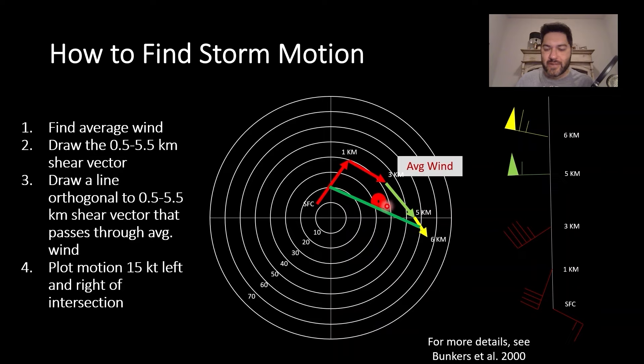Then you want to draw a line that's orthogonal to this green line that does pass through that average wind. Where you see that intersection, you plot 15 knots left and right of that. This will be the direction and speed of your left mover, and this will be the direction and speed of your right mover. For the right mover, it looks like it's moving east-southeast at roughly 25 knots, and the left mover in this case is moving to the east-northeast, almost northeast, at 10, 20, 30, 45 - so quite a bit faster moving.